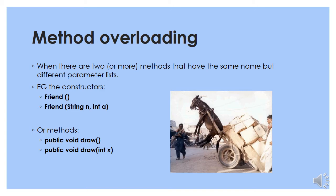Method overloading is when we have two or more methods that have the same name, but if you look at the parameter lists — the names of the variables in the brackets after the method name — you will see that they have different lists of parameters. For example, if we have the constructors Friend() and Friend(String n, int a), that method is overloaded because there are two types of Friend methods. Or if you have public void draw() and public void draw(int x), this method is also overloaded.